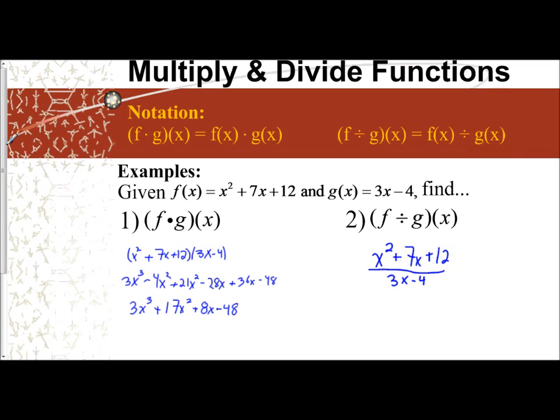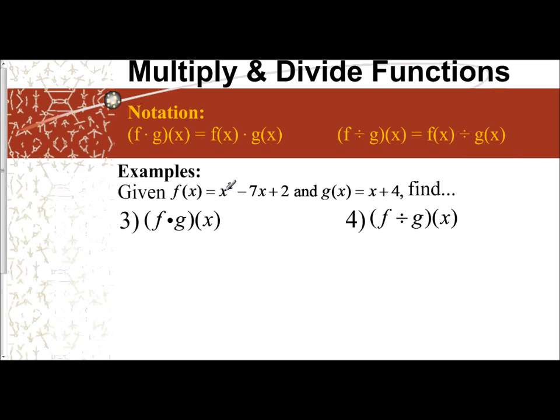We see multiplication, we see division. Let's do two more examples. This time, f of x is x squared minus 7x plus 2. In problem 3, I'm going to ask to take f of x times g of x. So x squared minus 7x plus 2 times g of x, which is x plus 4. Again, distribute x squared to x and x squared to 4 gives me x cubed plus 4x squared. Negative 7x to x is negative 7x squared. Negative 7x to 4 is negative 28x. 2 to x is positive 2x, and 2 to 4 is 8.